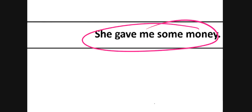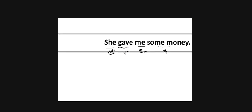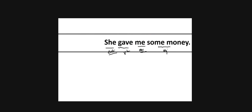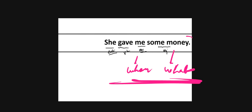The next type is: 'She gave me some money.' Subject, verb, object — here 'me' is one object and 'some money' is another object. How do we make this passive when there are two objects? 'Me' is also a somebody object. She gave whom — me. She gave what — some money. So this sentence has two objects, and we need to understand how to make it passive.